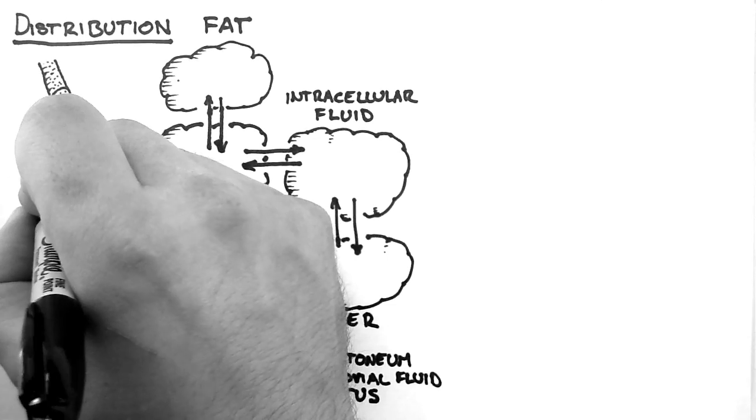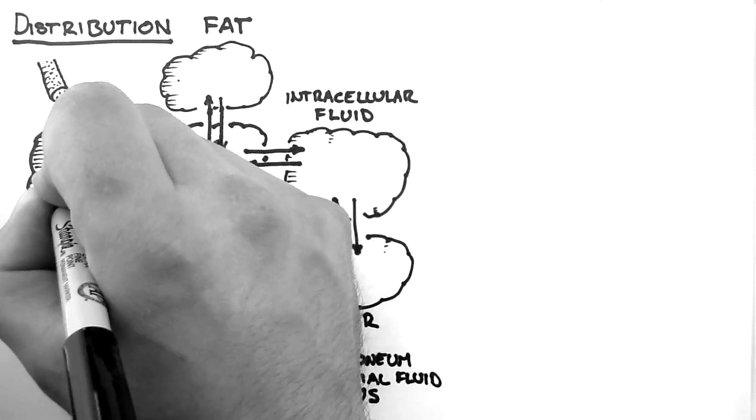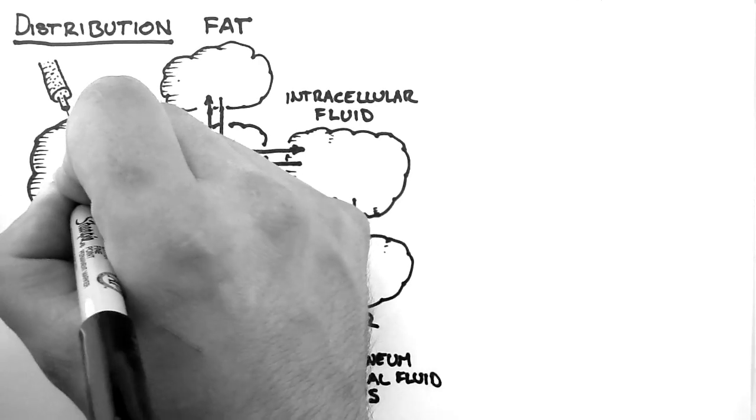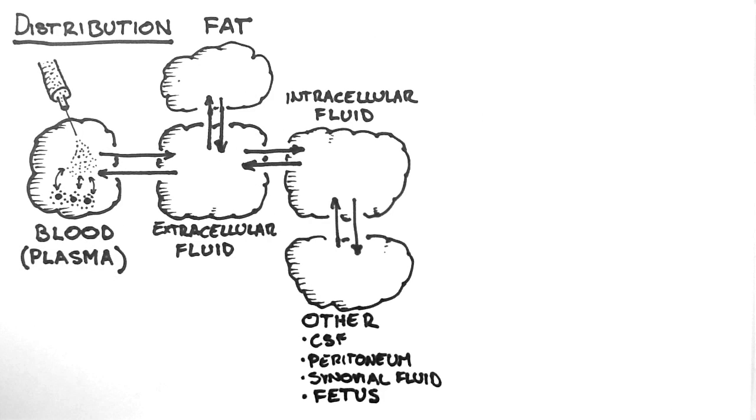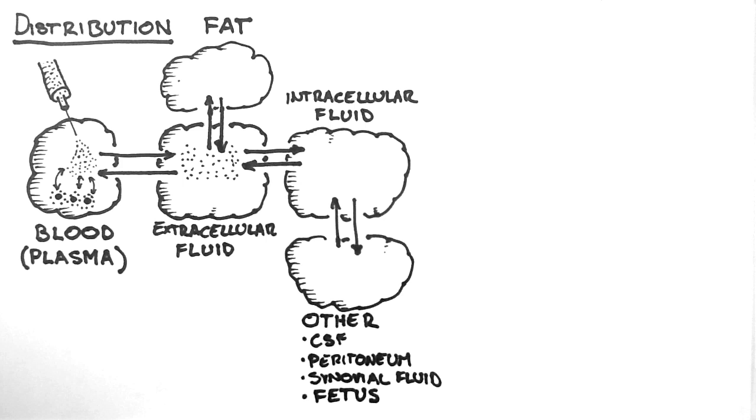When a drug is placed into a compartment, it often associates with binding molecules. These binding molecules are often proteins such as albumin. This process sequesters the drug within the compartment, effectively increasing that compartment's storage capacity. There is an equilibrium maintained between the bound drug and the unbound drug. The unbound drug within a compartment is then able to move into a new compartment, and thus an equilibrium is maintained between adjacent compartments.